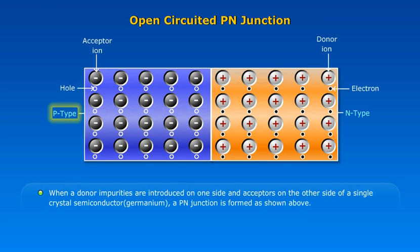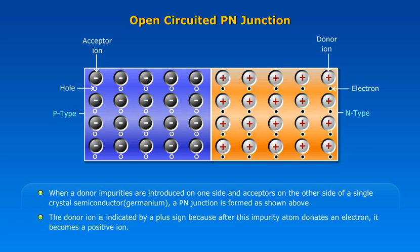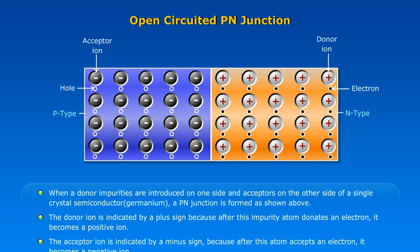Open-circuited P-N junction. When donor impurities are introduced on one side and acceptors on the other side of a single crystal semiconductor, germanium, a P-N junction is formed as shown above. The donor ion is indicated by a plus sign because after this impurity atom donates an electron, it becomes a positive ion. The acceptor ion is indicated by a minus sign because after this atom accepts an electron, it becomes a negative ion.